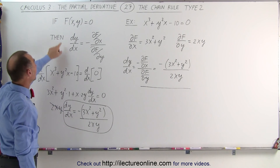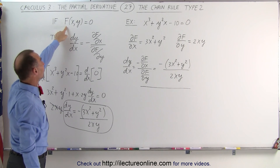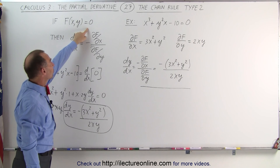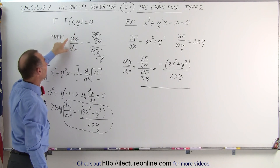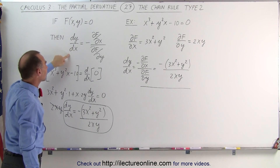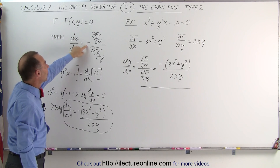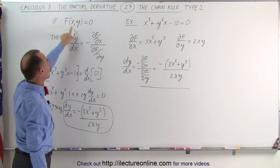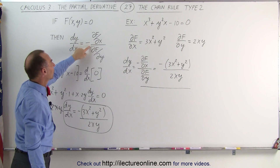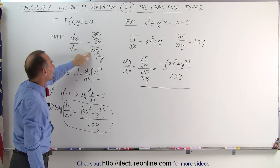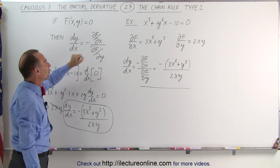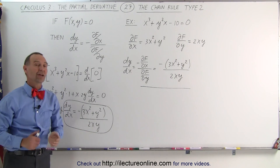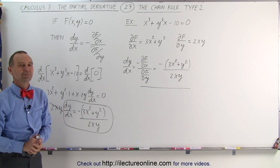Again, if we can set the function of multiple variables equal to zero, then dy/dx can be written as the negative of the partial derivative of the function with respect to x divided by the partial of the function with respect to y. That's how that works.